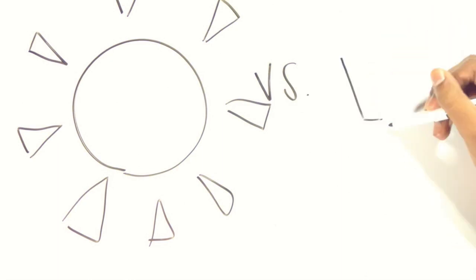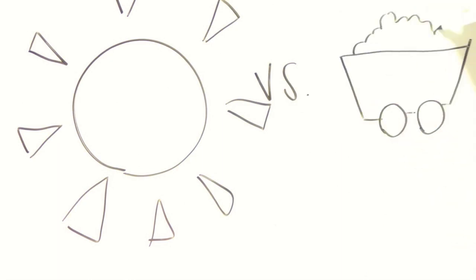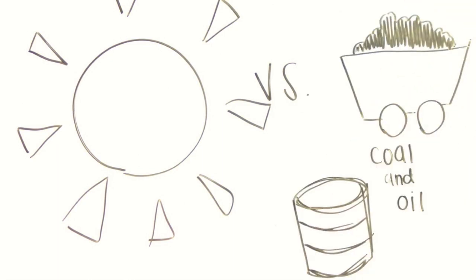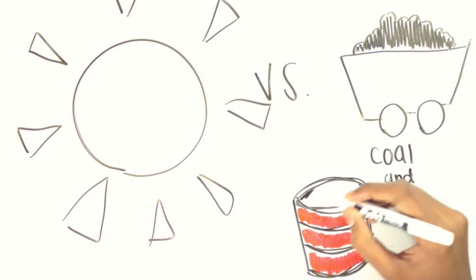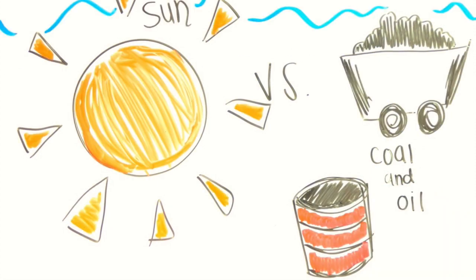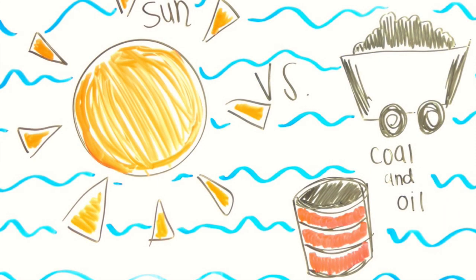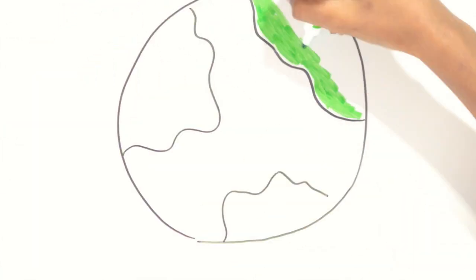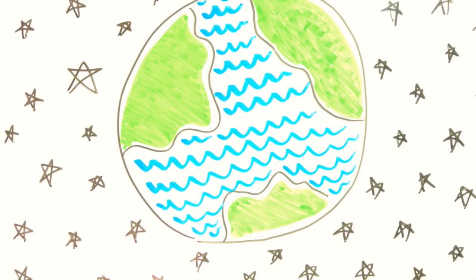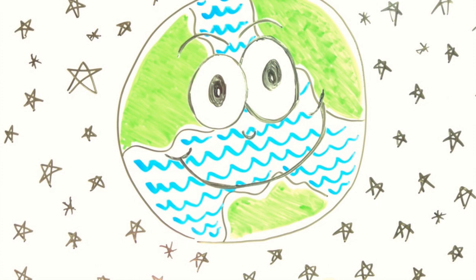Maybe someday fractal geometry could be used to create more efficient solar panels by capturing more sunlight coming in at different angles — it would be a great source of renewable energy compared to oil or coal and would clean up our environment. So next time you look at nature, see if you can find fractals in all the chaos.